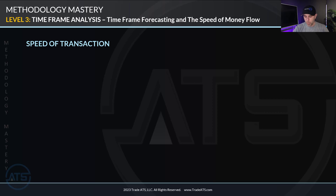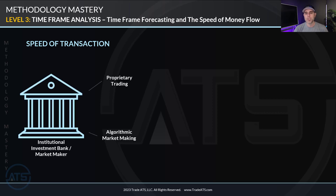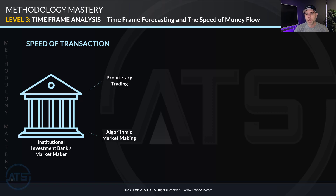Let's start with the institutional bank and the market maker, understanding how they process transactions on each side of the spectrum. We have two different sides: algorithmic market making, which involves a lot of very fast transactions, and then we have proprietary trading, which is much slower. Let me explain why.